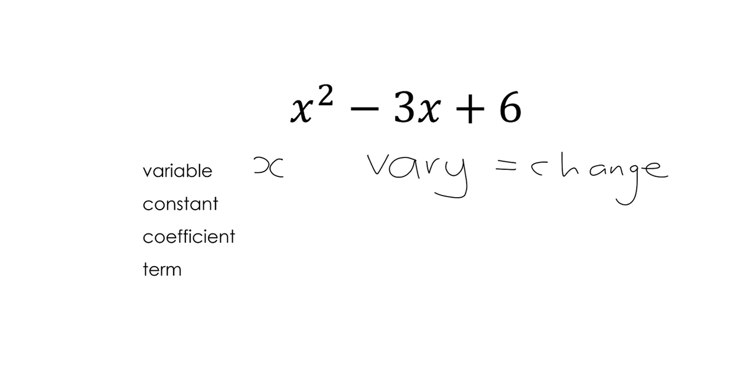So if you talk about something that varies, it's something that changes. And this is the idea we get when we talk about a variable. x is a variable because we can put in a whole lot of different values for x.